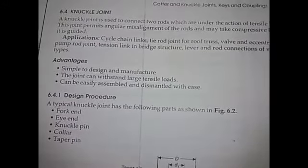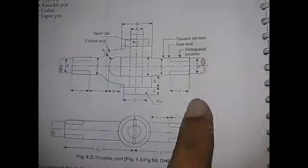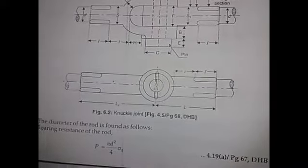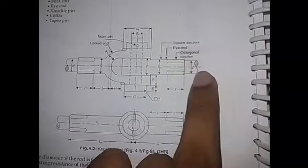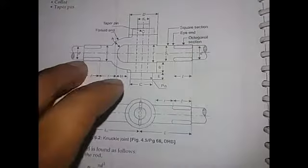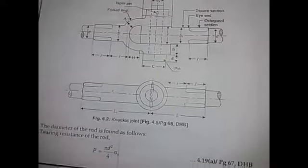We need to assemble and dismantle it. Now we will do the design procedure. We need to identify the main components. The main question is that we need to connect the tie rod to form a force. The force connects the collar and the knuckle pin. We will use the first equation and start with diameter D.